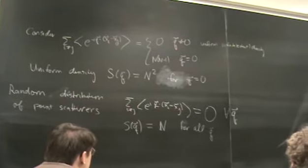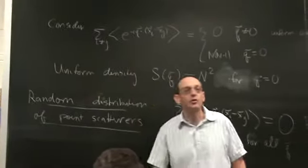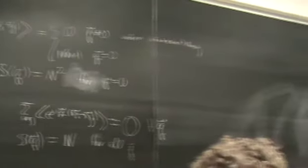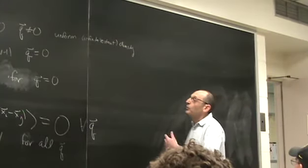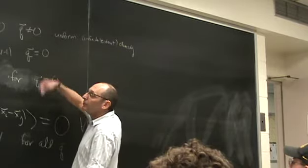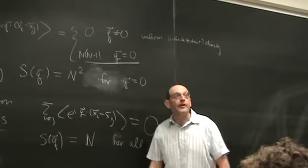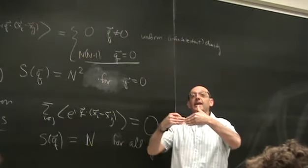Even if we have a random distribution of scatterers or a large fluctuation in density, we always have forward scattering — there's always coherent forward scattering. What is the physical implication of forward scattering?